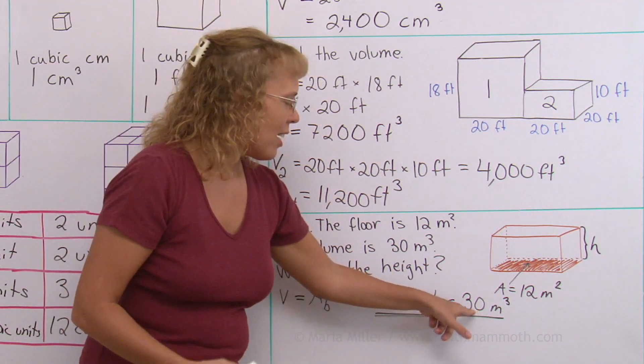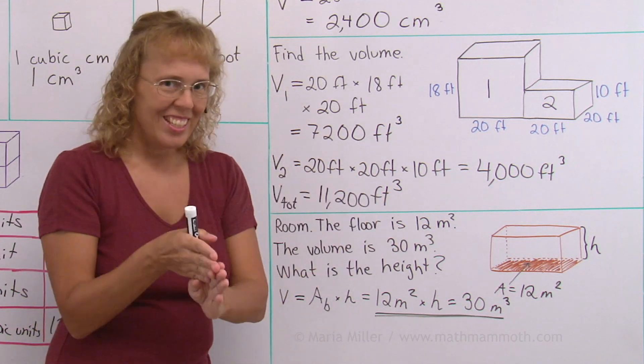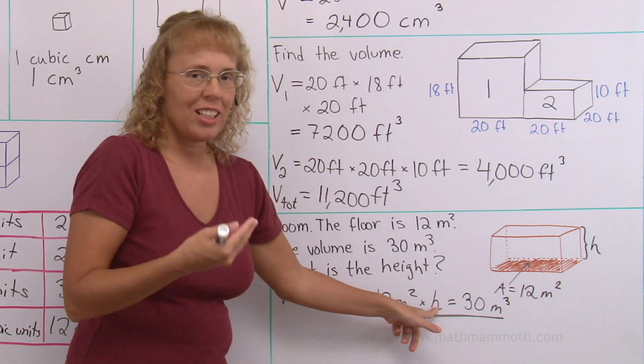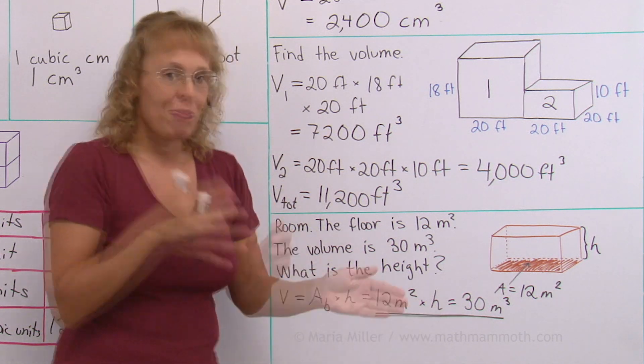But 30 is right in the middle of 24 and 36, right? So therefore, the number that goes there is actually right in the middle of halfway between 2 and 3.